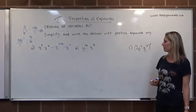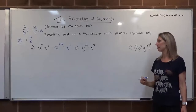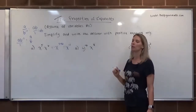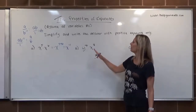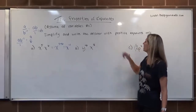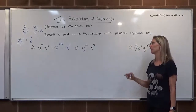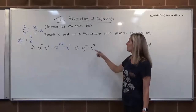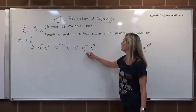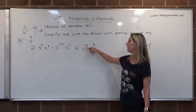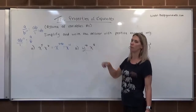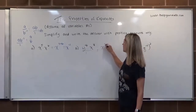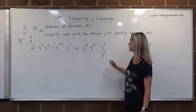For letter B, we have y to the negative 6th times x to the 8th. Since we don't have the same base, we can't use same base multiplication. But the answer must have positive exponents only, and we have a negative exponent here. So we create a fraction, and that factor becomes positive in the denominator: x to the 8th over y to the 6th.